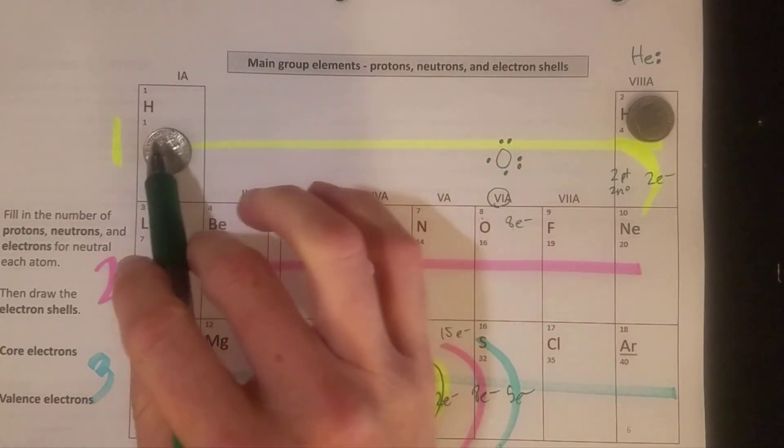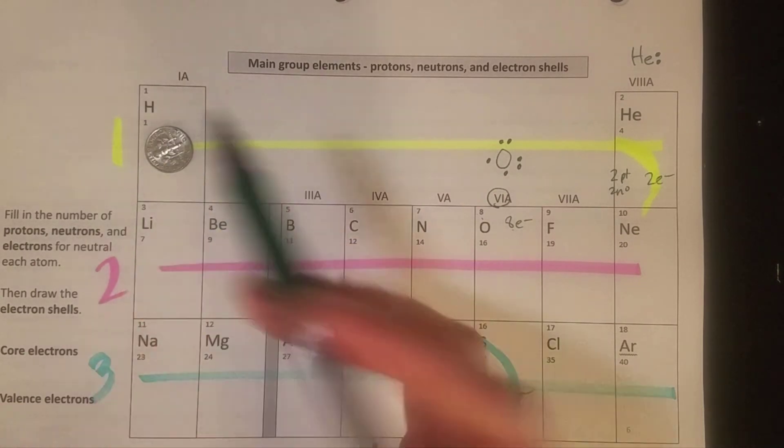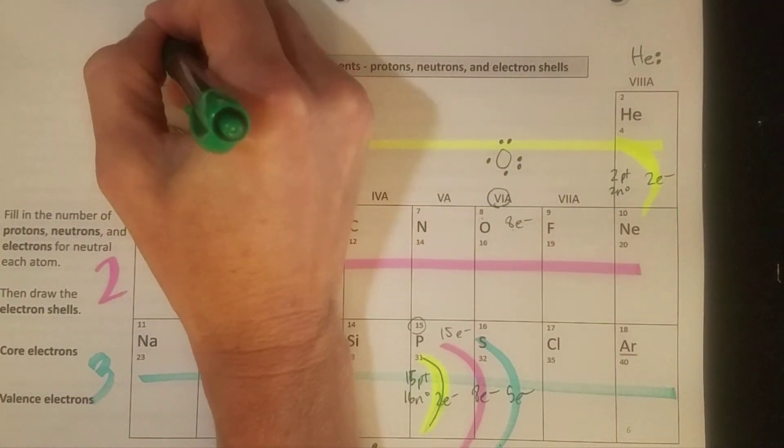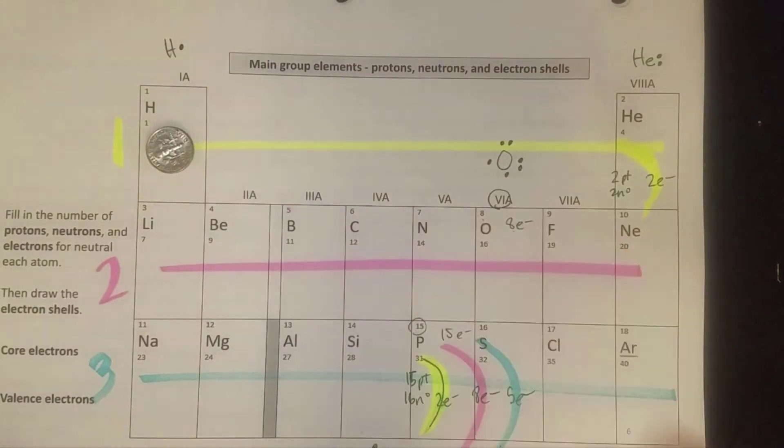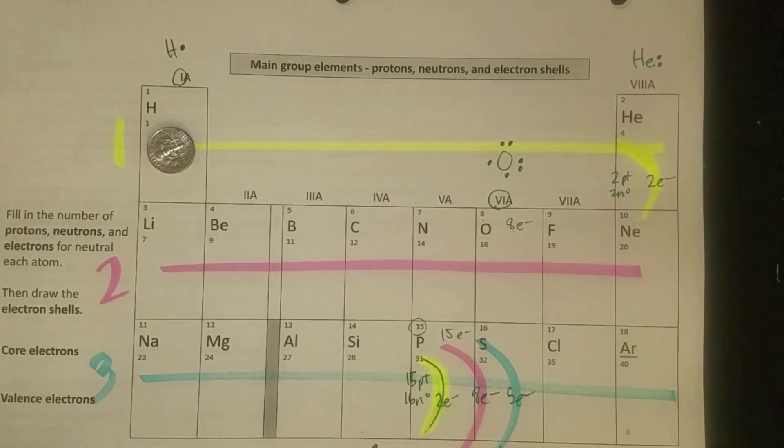If I'm drawing hydrogen, hydrogen now only has one valence electron. That's what these little markers are, so that would be hydrogen with one dot. Notice that one dot correlates to that one group number there.